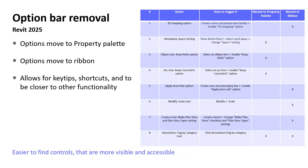Some options from the options bar have been moved to the properties palette and to the ribbon. This relocation to the ribbon enhances visibility, while integration into the properties palette increases flexibility and accessibility. It allows for key tips, shortcuts, and other items to be closer to the functionality. A good example is that some things you're used to seeing in the options bar have now just been moved to the ribbon.